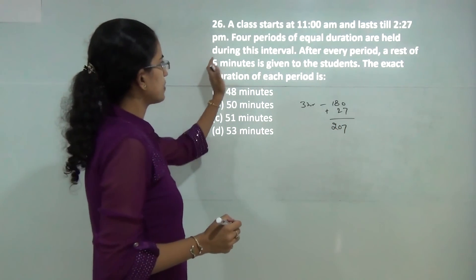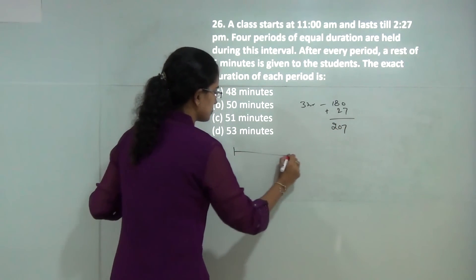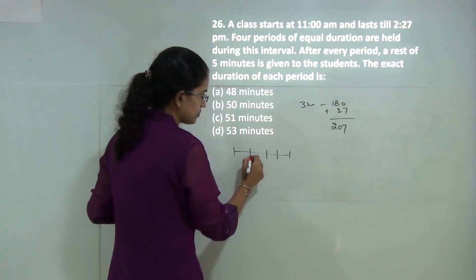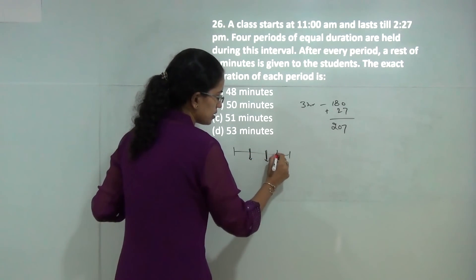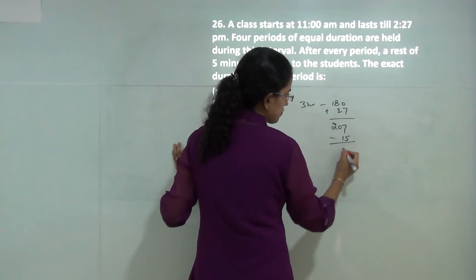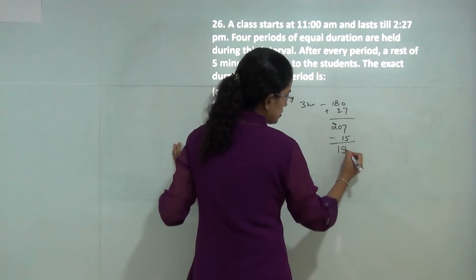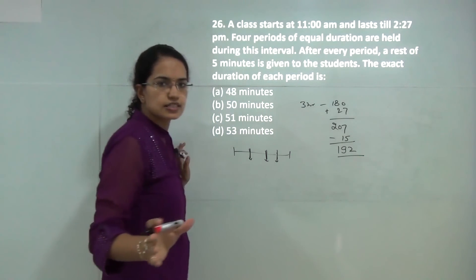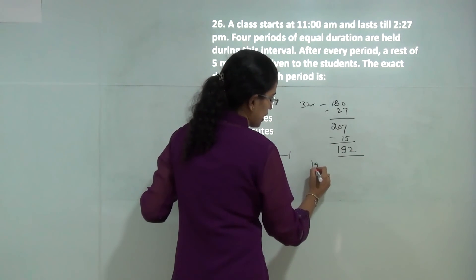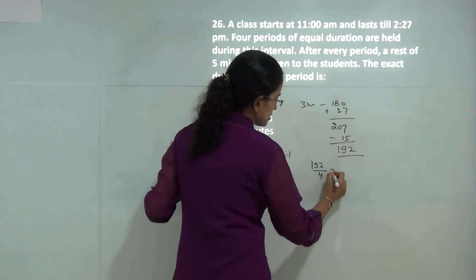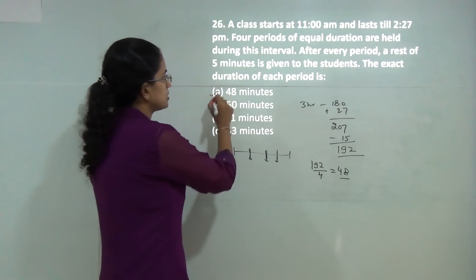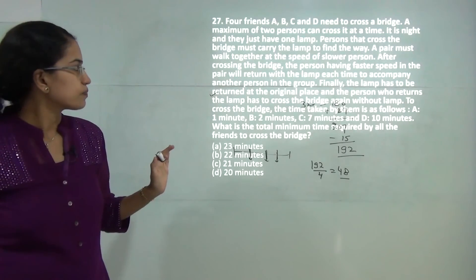Now out of that you have 4 periods. Breaking down 4 periods, there would be 3 intervals, each interval is 5 minutes, so total interval duration is 15 minutes. Total time for classes would be 192 minutes. In 192 minutes with 4 classes, the time for each class would be 48 minutes. So 1 would be the correct answer.